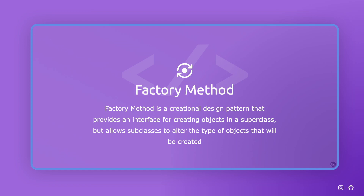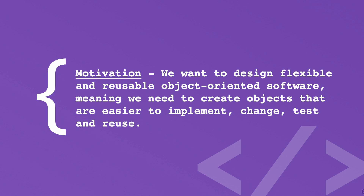Factory method is a creational design pattern. Remember in the first video when we spoke about singleton, we have three categories of design patterns, so if you want a refresher I will add the video in the description below. Factory method is a creational design pattern that provides an interface for creating objects in a superclass but allows subclasses to alter the type of the objects that will be created.